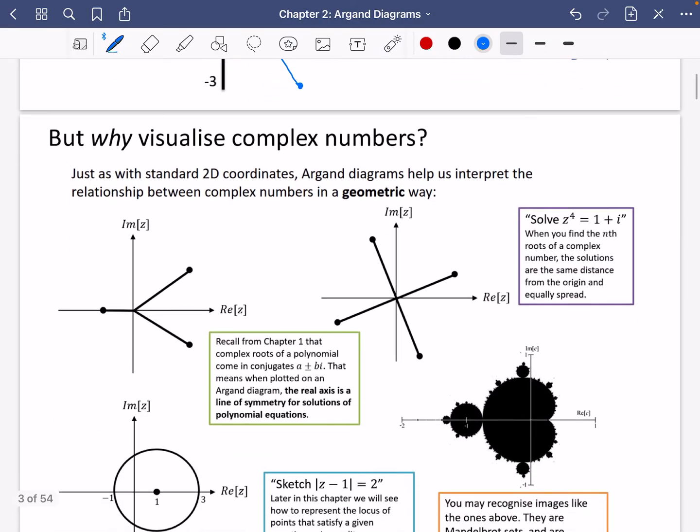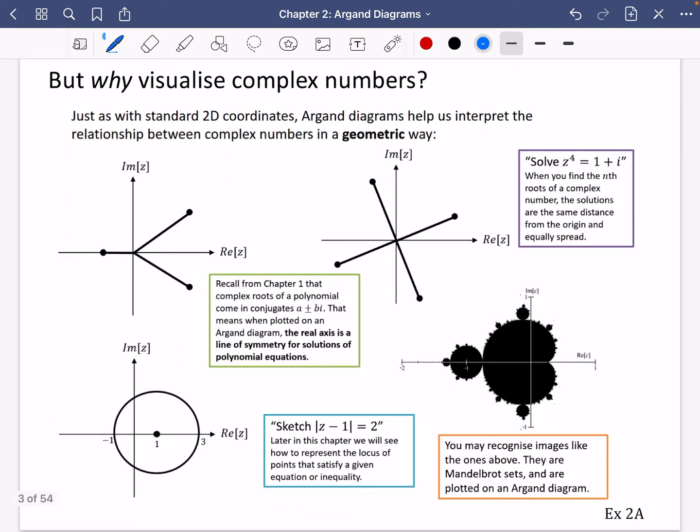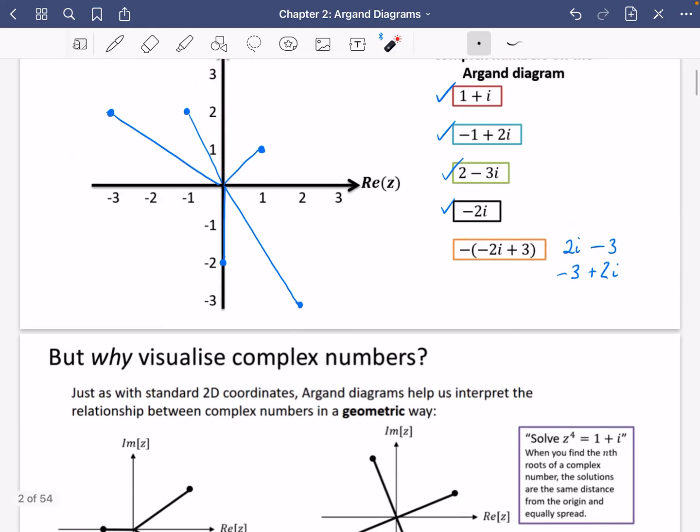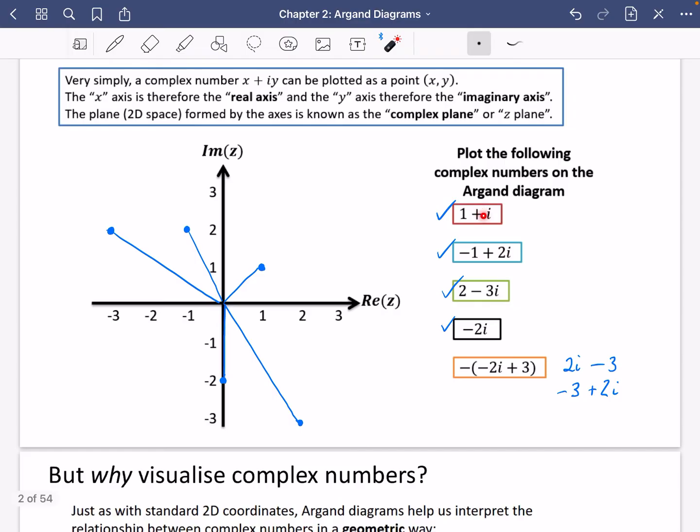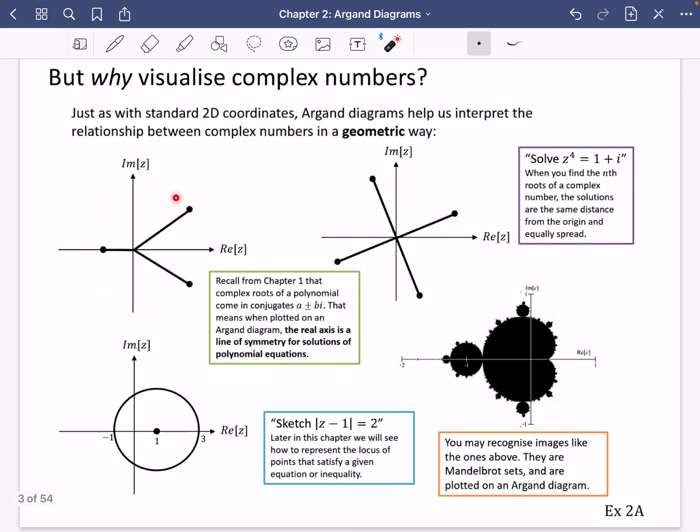So why might we actually want to do this? Why might we want to visualize complex numbers? Well, just with standard 2D coordinates, Argand diagrams help us to interpret the relationship between complex numbers in a geometric way. Looking at these things, we can see them as just a pair of numbers, and it doesn't really tell us very much. But as soon as we start putting them on a plane, we start to spot properties that weren't necessarily obvious that they were there.